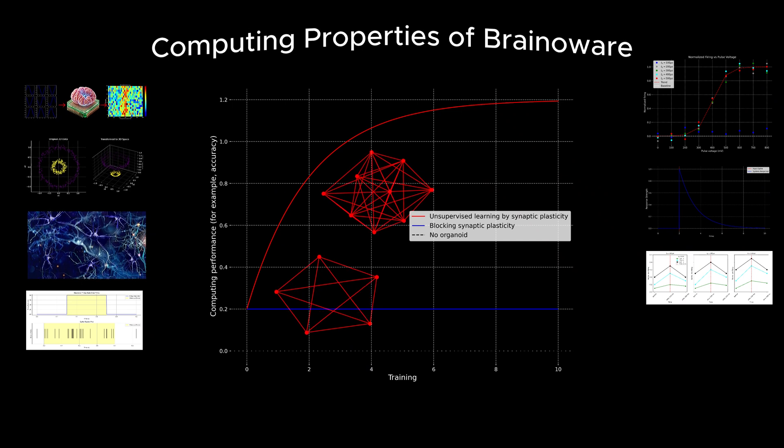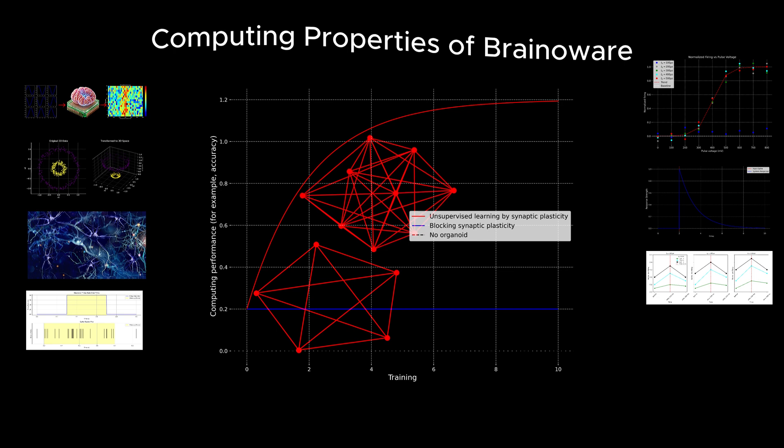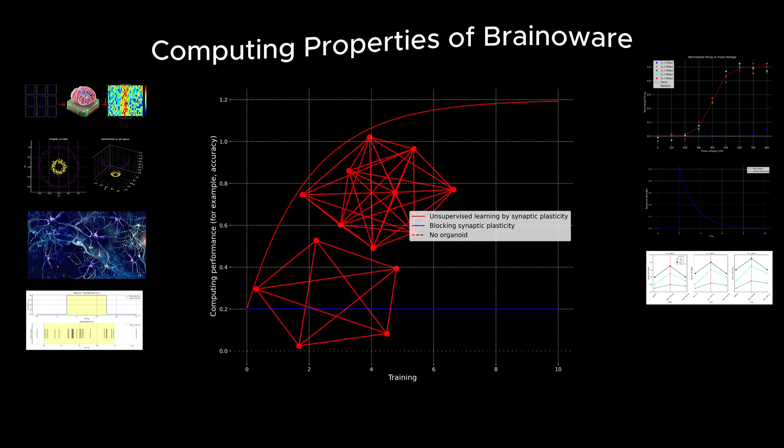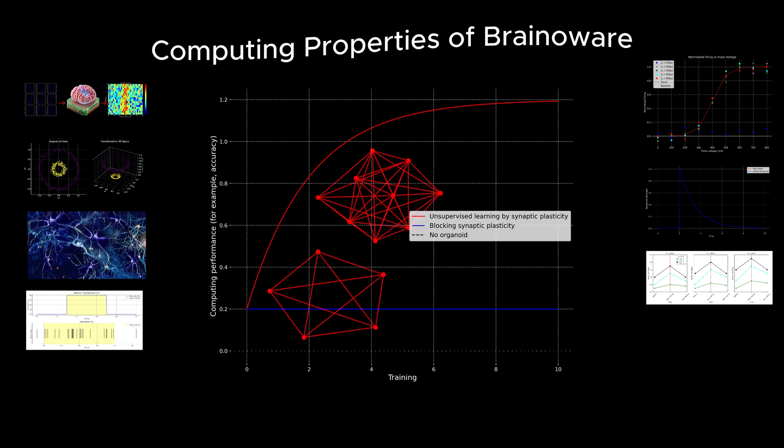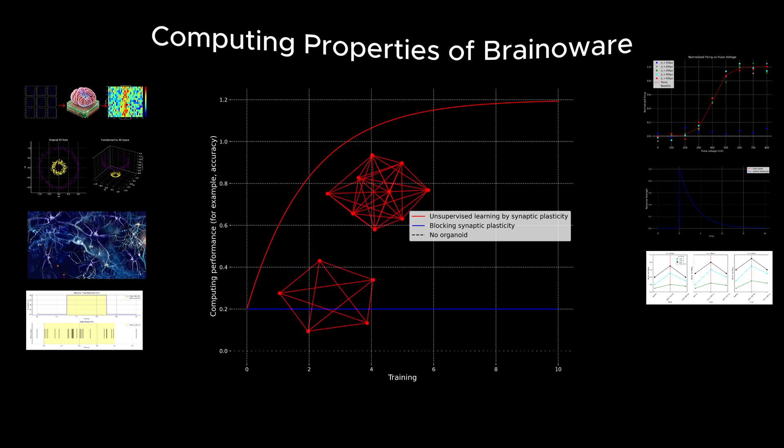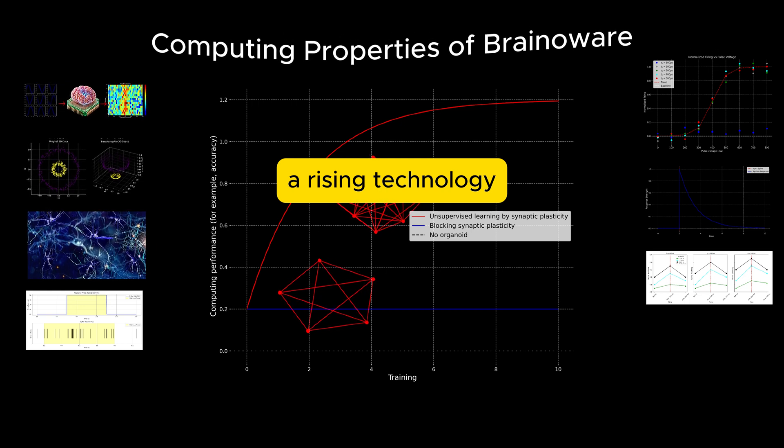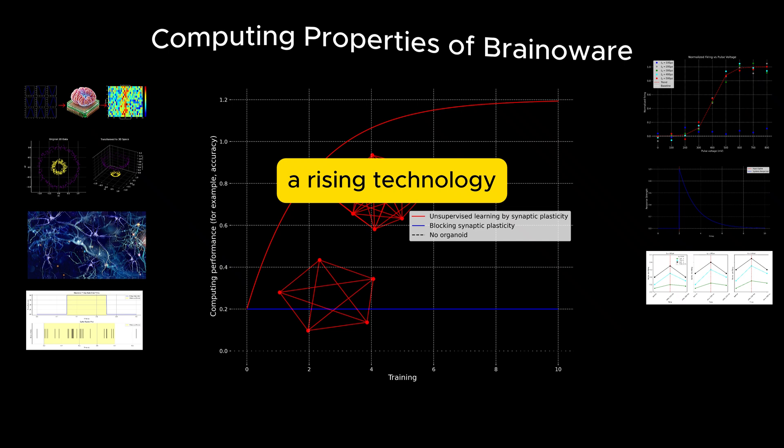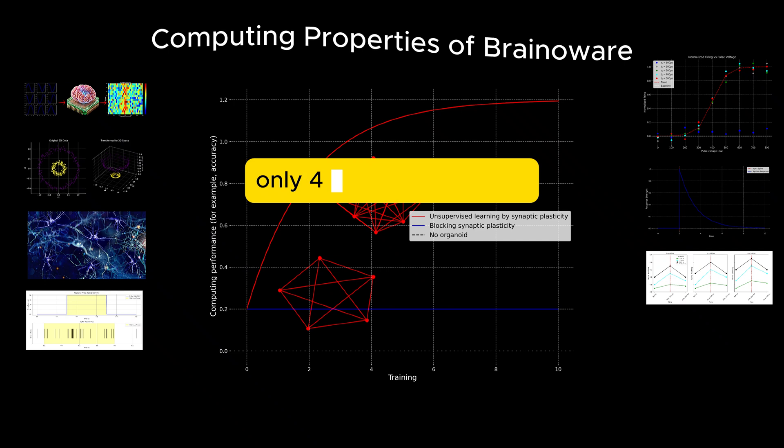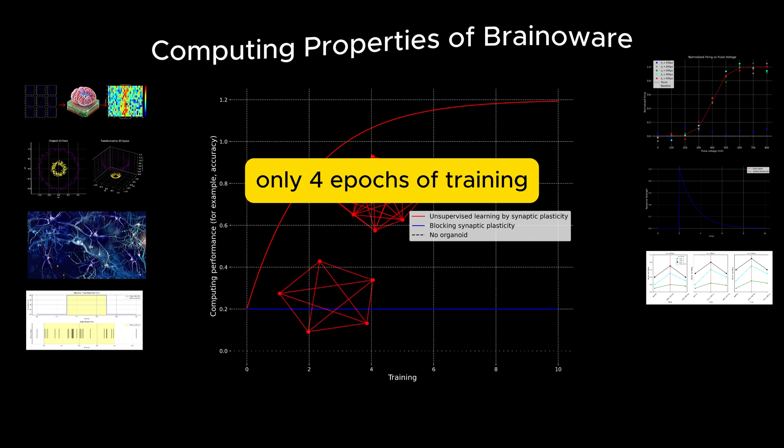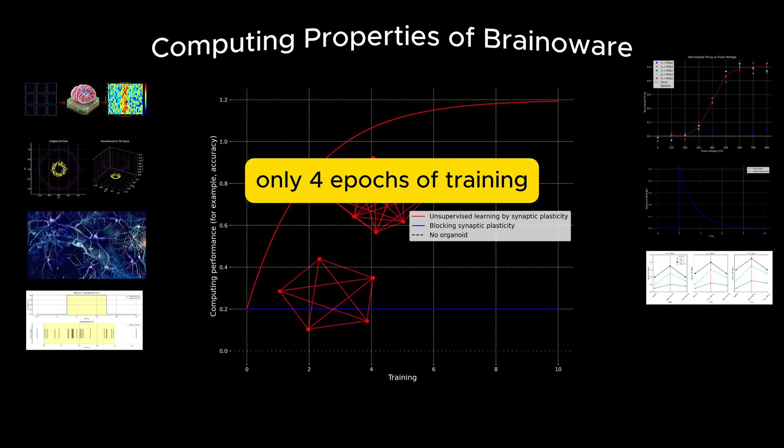The researchers observed changes in the organoid's functional connectivity, such as the strengthening, weakening, pruning, or formation of neural connections during the training process. These adaptations highlighted BrainAware's capacity for dynamic learning and its potential for real-world AI applications. This study demonstrated that BrainAware, despite being an early-stage technology, can effectively perform speech recognition tasks with minimal training data, showcasing its potential as a low-energy, adaptive AI computing system.